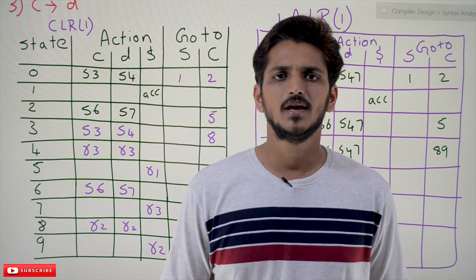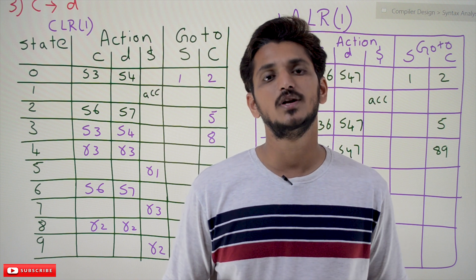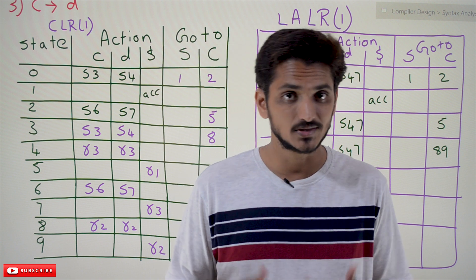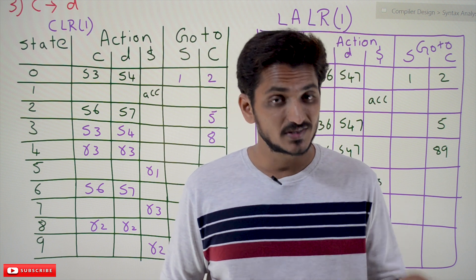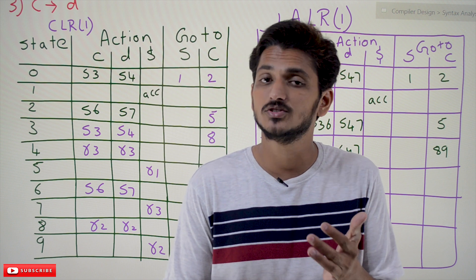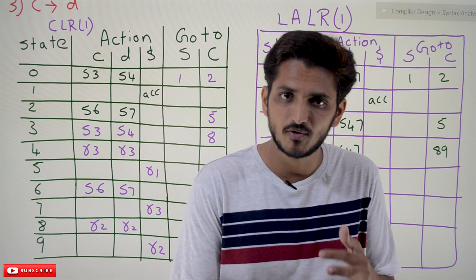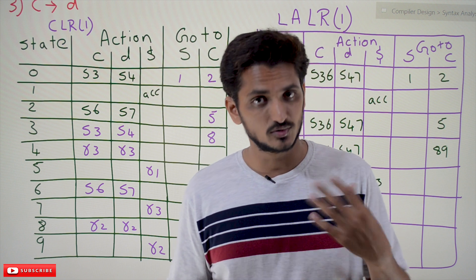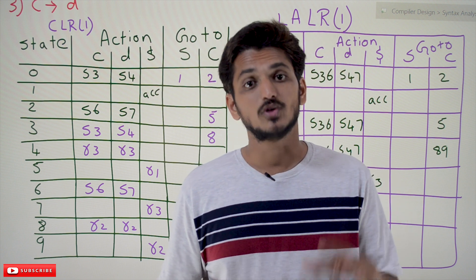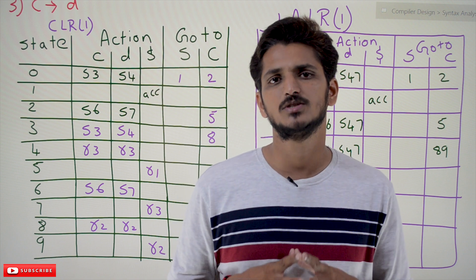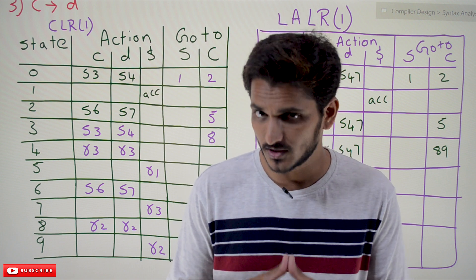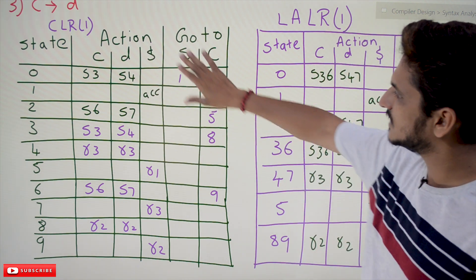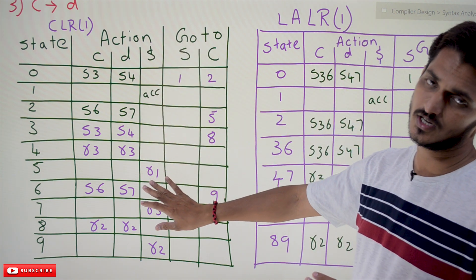Hi, welcome to Learning Monkey. I am Raghu. In this class we'll discuss about LALR(1) parsing table — how to construct the table. In previous classes we already discussed about LR(1) construction of items and CLR(1) construction of parse table. This is a continuation class; we use the same example. Please watch our previous classes and come back here. The link for the playlist is provided in the description below. Coming to today's class, let's refresh our example. This is the CLR(1) table which we constructed in our previous class.